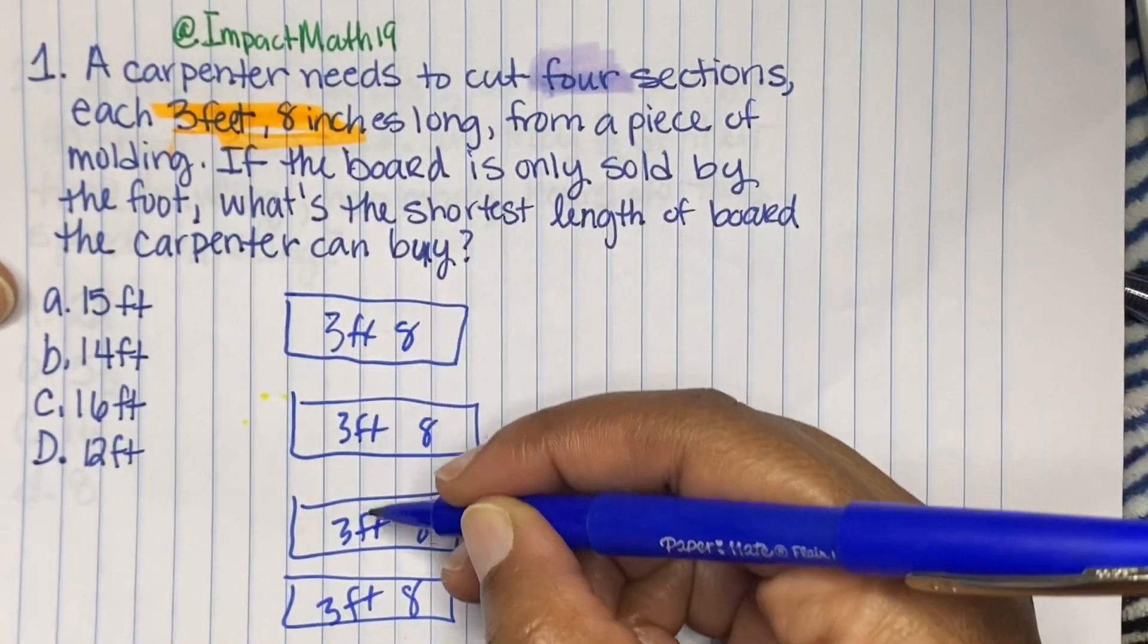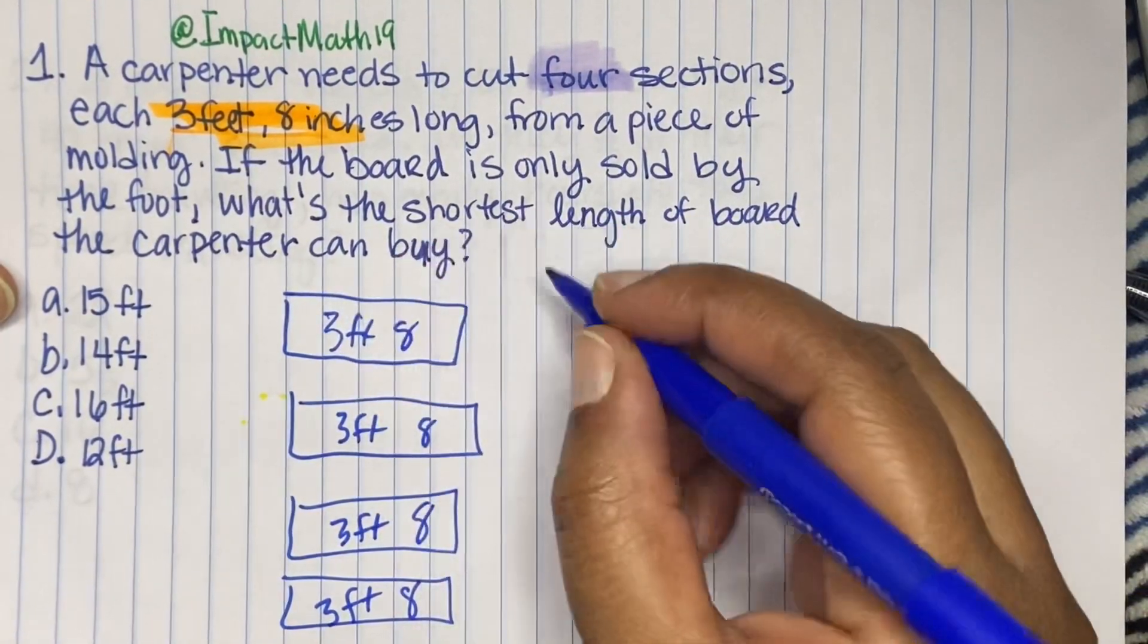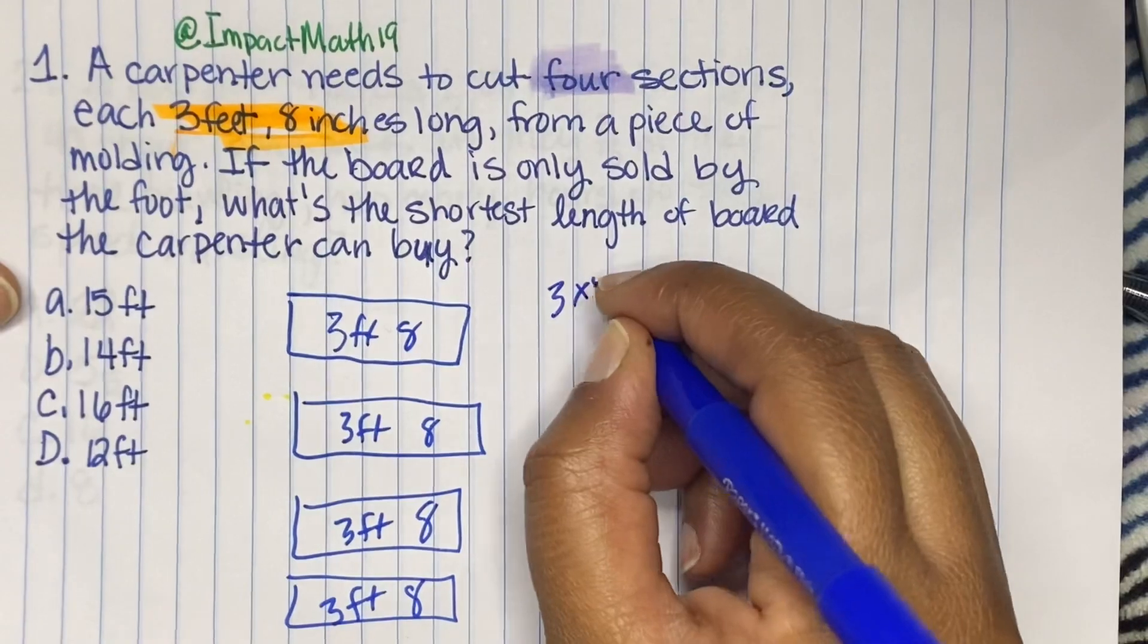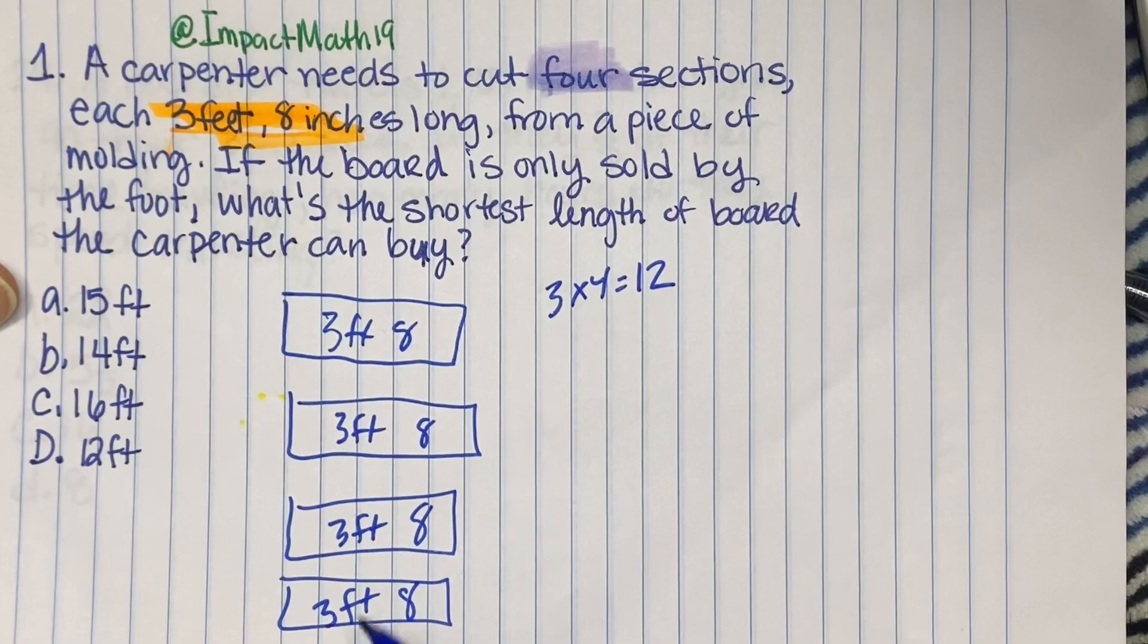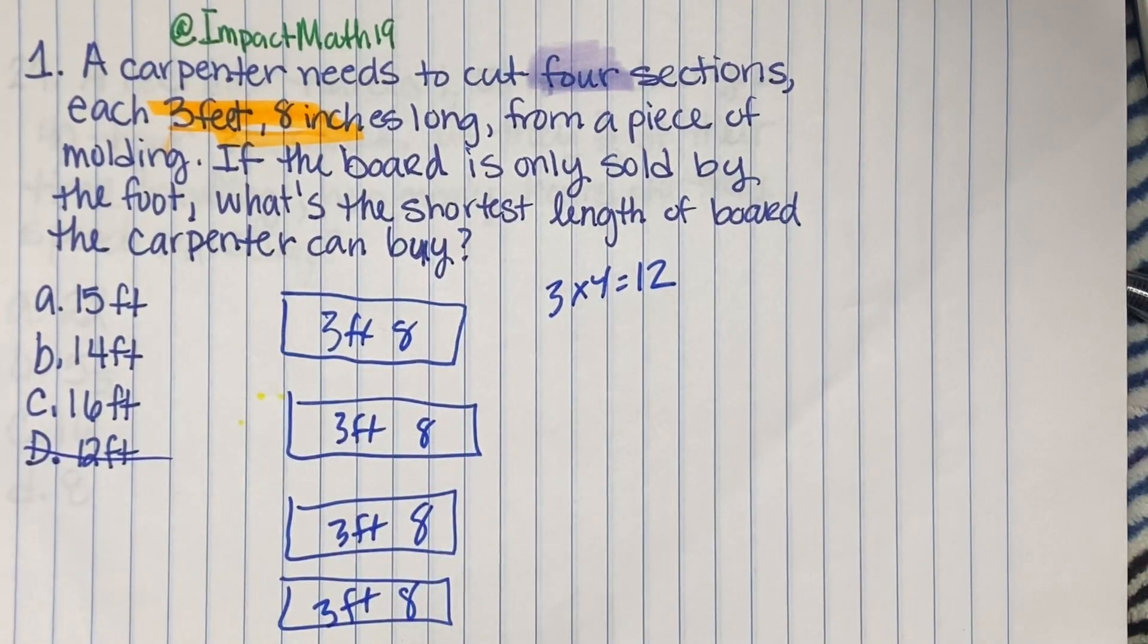So we already know if we just add up our feet here, we're doing three times four, which is 12. And we have all these eight inches. So we know D has to be out.